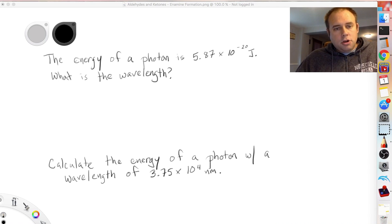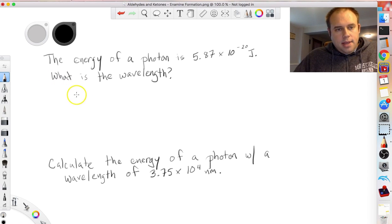So number one says the energy of a photon is 5.87 times 10 to the minus 20 joules. What is the wavelength? So let's think about what we need here. In this equation we're going to look for the wavelength. We know that the energy which is given to us is equal to Planck's constant times the frequency. So we can find frequency if we're given the energy. That's step one, let's find frequency.